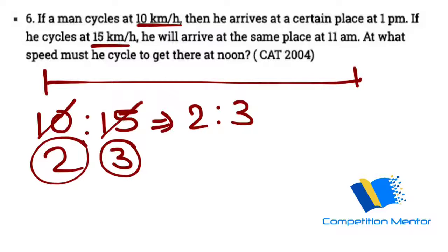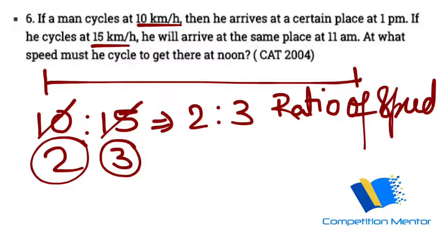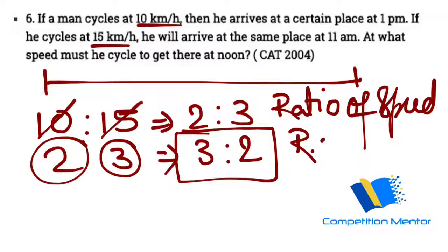So this is the ratio of speed. This is the ratio of time, obviously when distance is constant. This is the ratio of speed. And then you will have ratio of time as 3 is to 2, that is ratio of time.